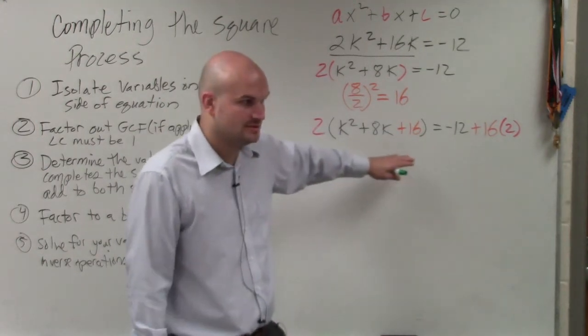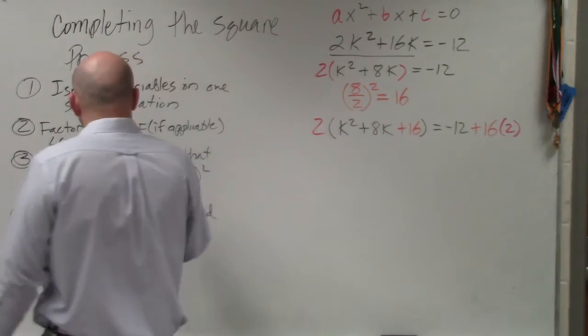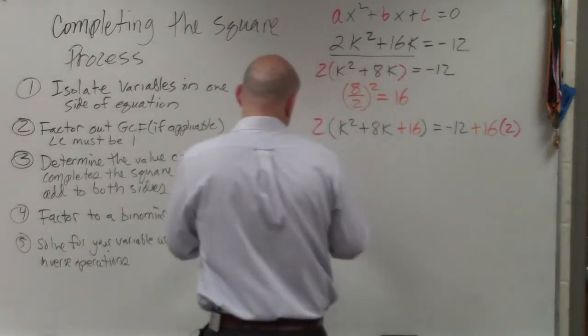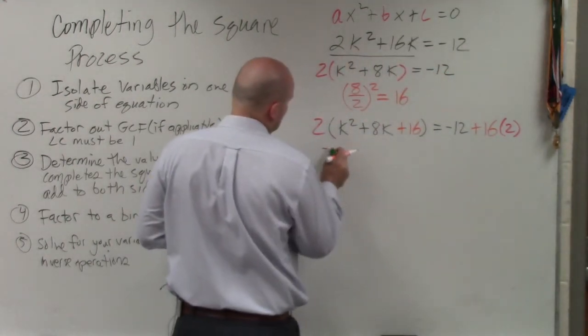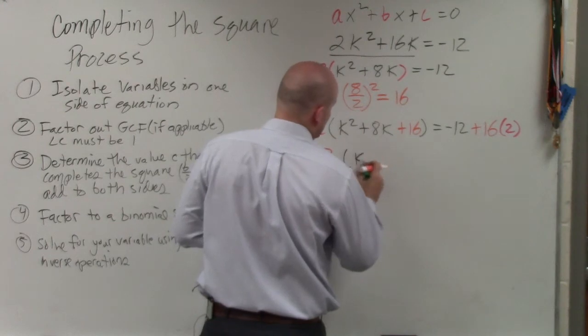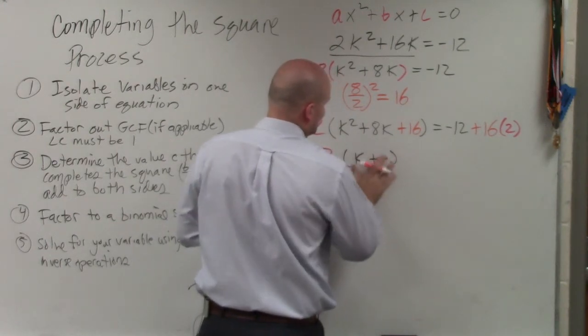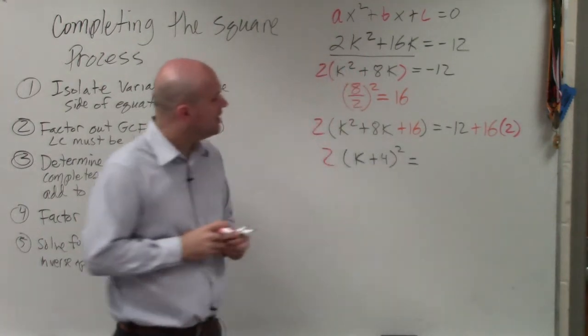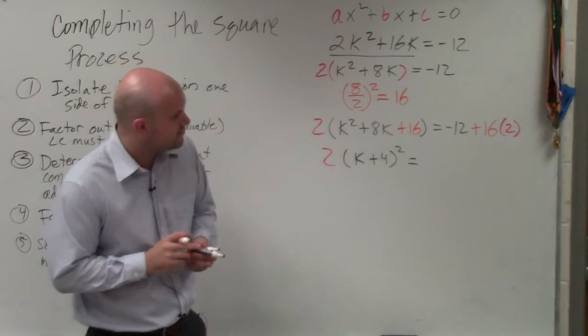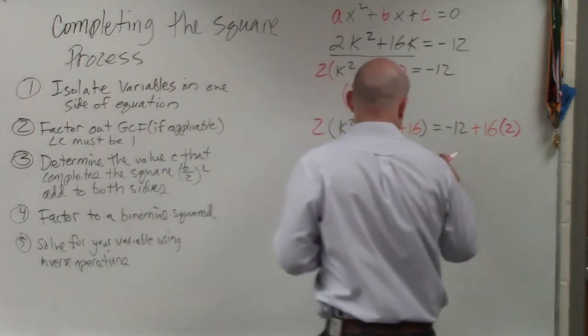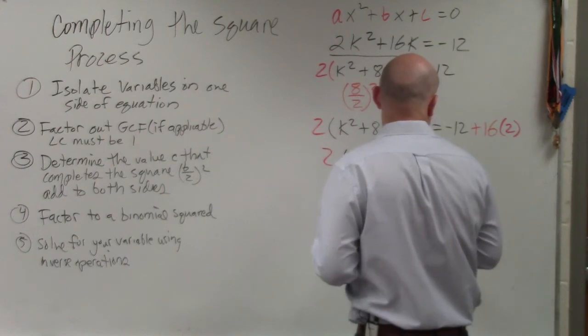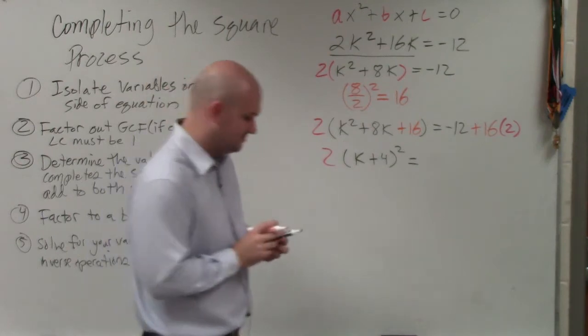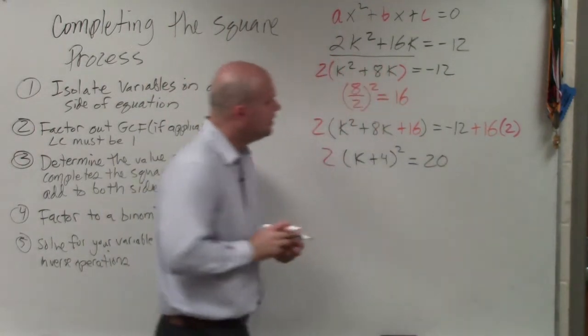No. Good? Yes? Question? No. So therefore, we need to factor to a binomial squared. This again, ladies and gentlemen, just comes into your factoring techniques. So we have 2 times, making sure you guys understand that this is k plus 4, not k plus k, k plus 4 squared equals negative 12 plus 32 is going to be 20. What am I doing? It's 20. Thank you.